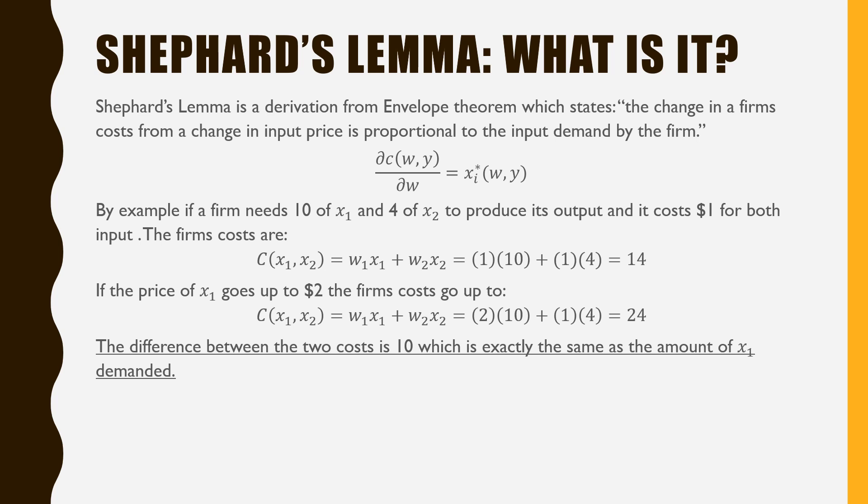If the price of x1 goes up to $2, the firm's costs go up to $24. The difference between the two costs is 10, which is exactly the same as the amount of x1 demanded.